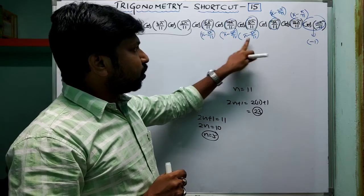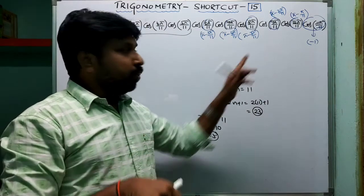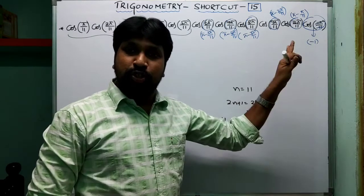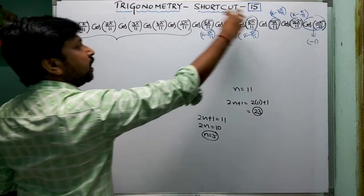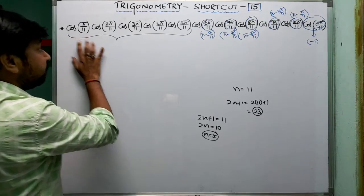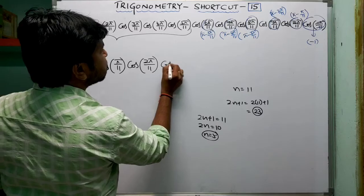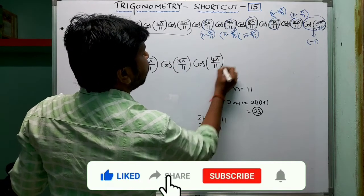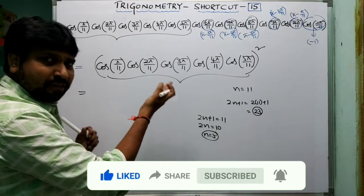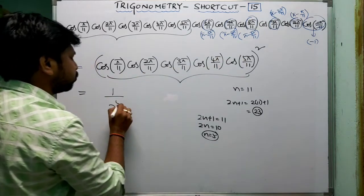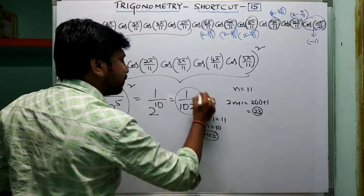We get five negative signs from the five converted terms: (−1)⁵ = −1, and also one more factor of −1 from cos(π) = −1, giving (−1)·(−1)⁵ = +1. So the whole expression is positive. The converted terms repeat: cos(π/11), cos(2π/11), cos(3π/11), cos(4π/11), cos(5π/11) appear twice, giving [cos(π/11)·cos(2π/11)·cos(3π/11)·cos(4π/11)·cos(5π/11)]². Applying the formula: [1/2⁵]² = 1/2¹⁰ = 1/1024. The answer is 1/1024.